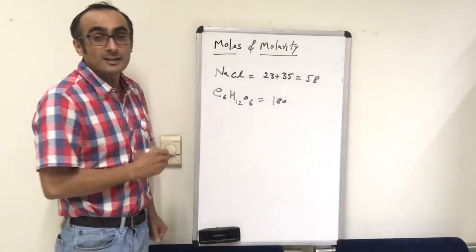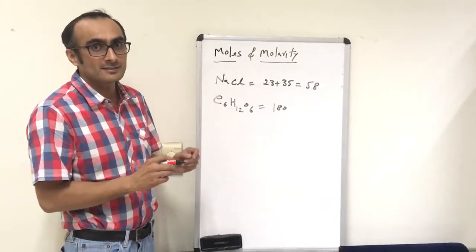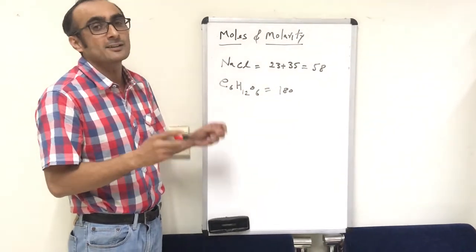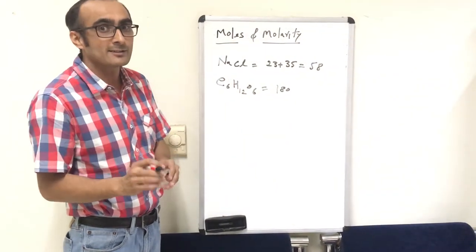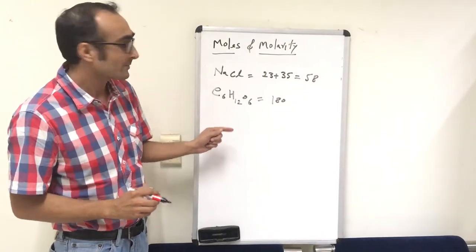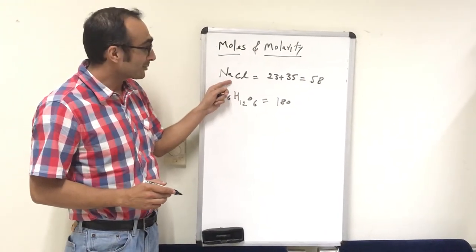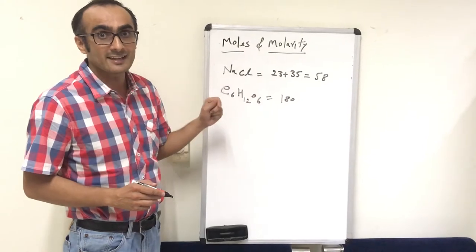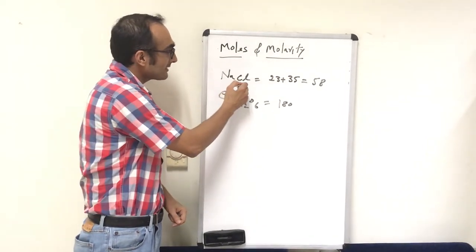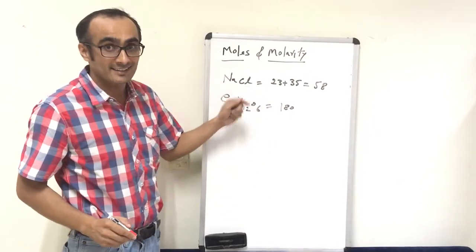Before that we need to understand molecular weight. The molecular weight of a compound is the cumulative, combined weight of all the atoms involved in that compound. For example, NaCl is made of two atoms, sodium (Na) and Cl. If you add the atomic weight of sodium and Cl, that will be the molecular weight of NaCl.